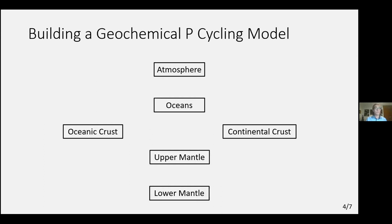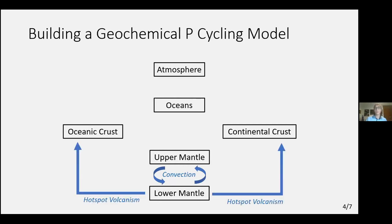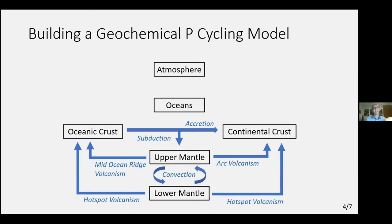Some of the processes we've included are convection in the mantle, which can be parameterized in a very simple way, but also hotspot volcanism, which brings material including phosphorus from the lower mantle to the upper crust. We also have forms of volcanism more related to the upper mantle, which also bring up phosphorus. To close the cycle, we have subduction, which brings the phosphorus present in the oceanic crust back to the upper mantle.